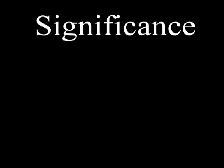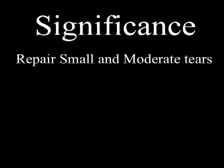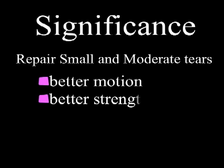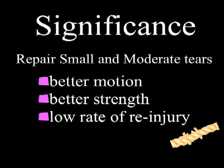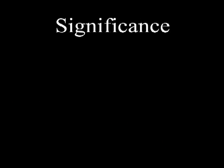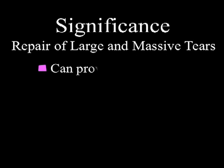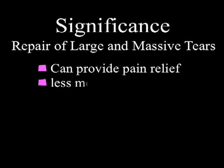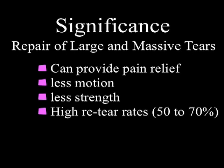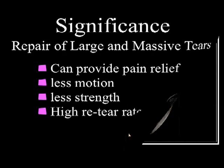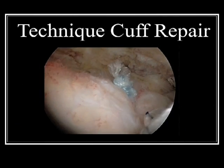The significance of this continuum of rotator cuff injury is that different expectations and outcomes generally follow repair of different sized tears. Following repair, patients with small and moderate cuff tears exhibit good motion, good strength, and enjoy low rates of re-injury. However, repair of large or massive cuff tears may produce good pain relief but are generally marked by restricted motion, limited strength, and high re-tear rates.